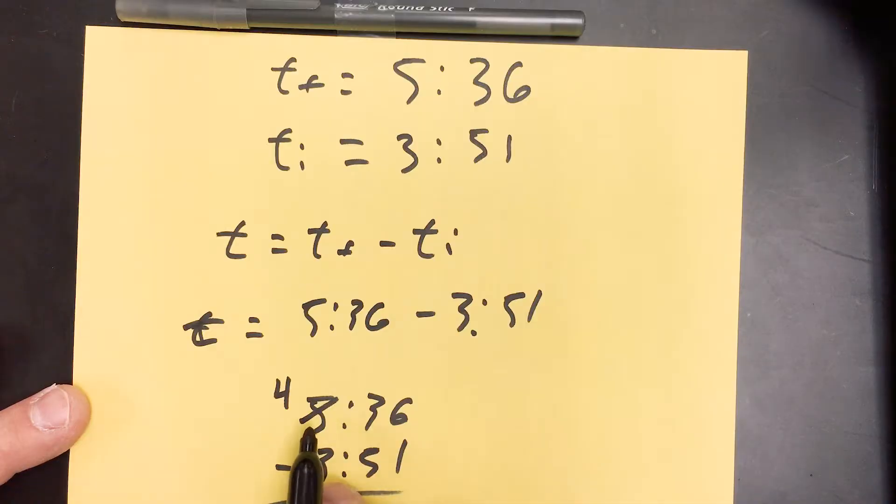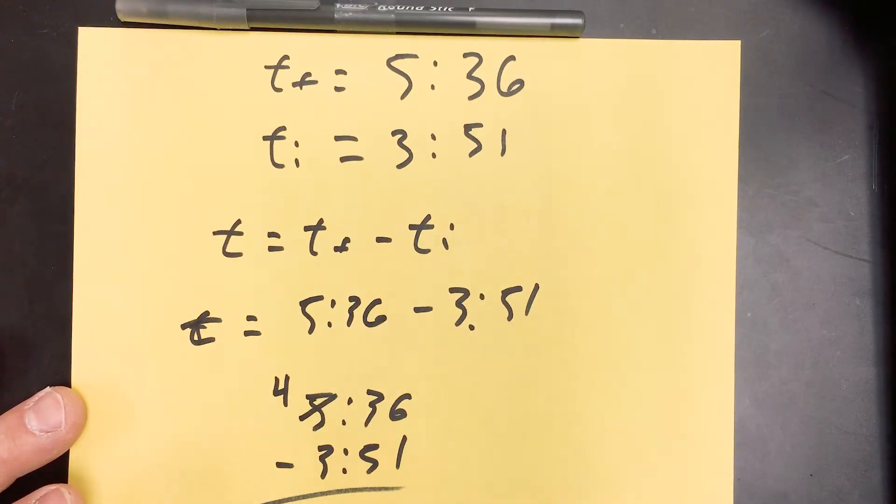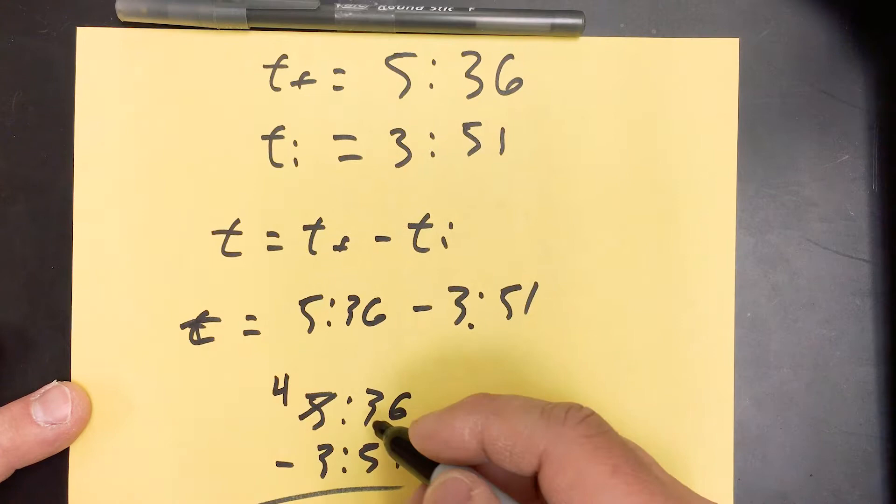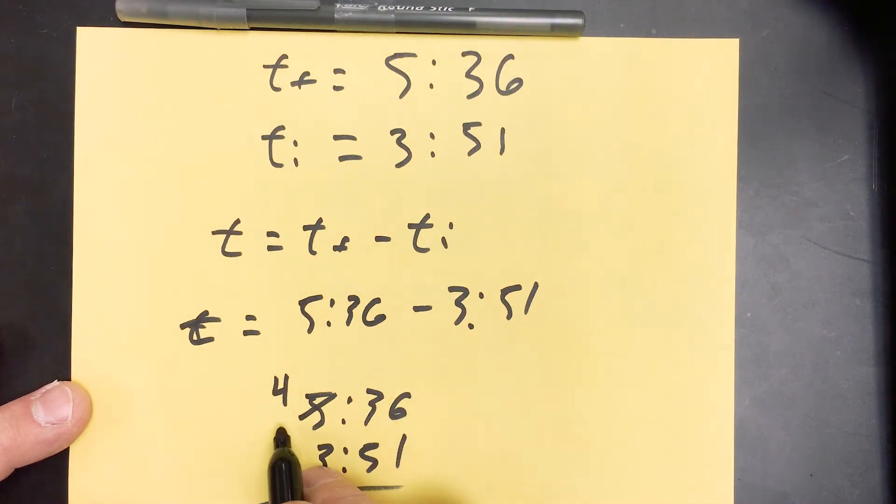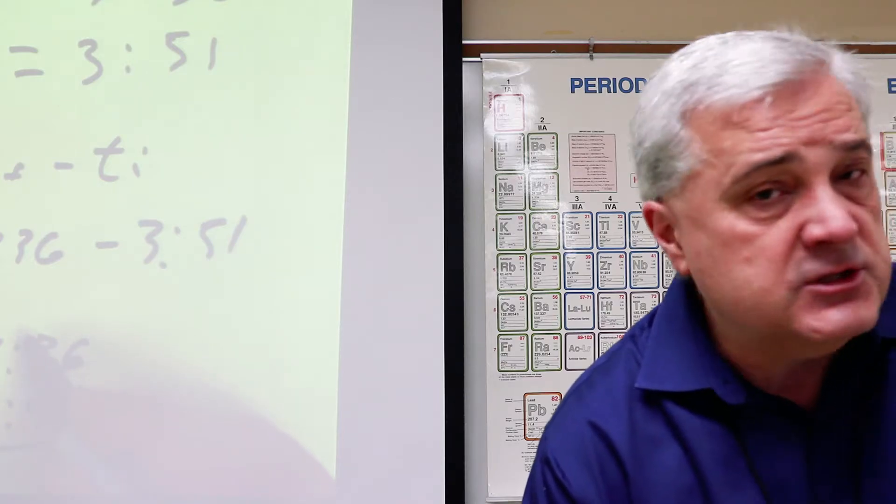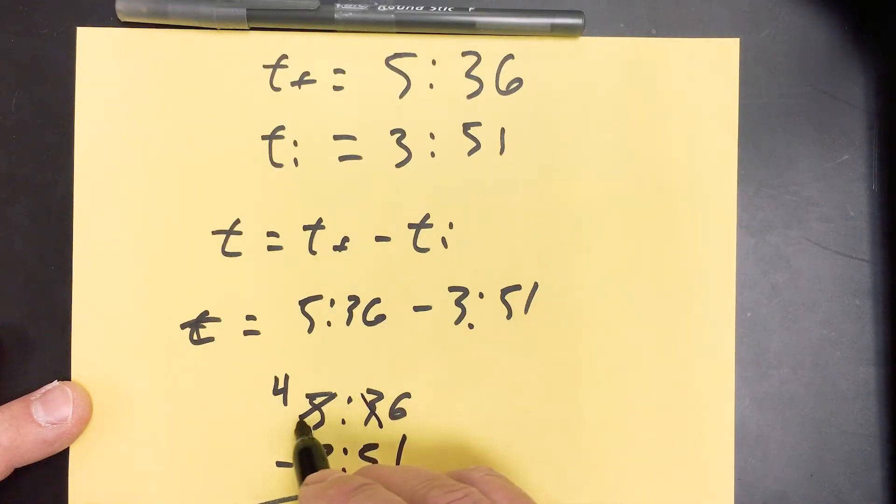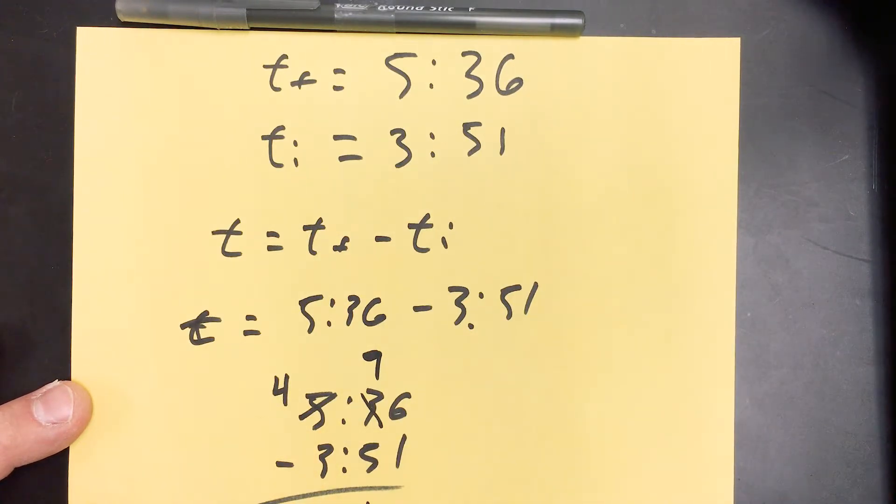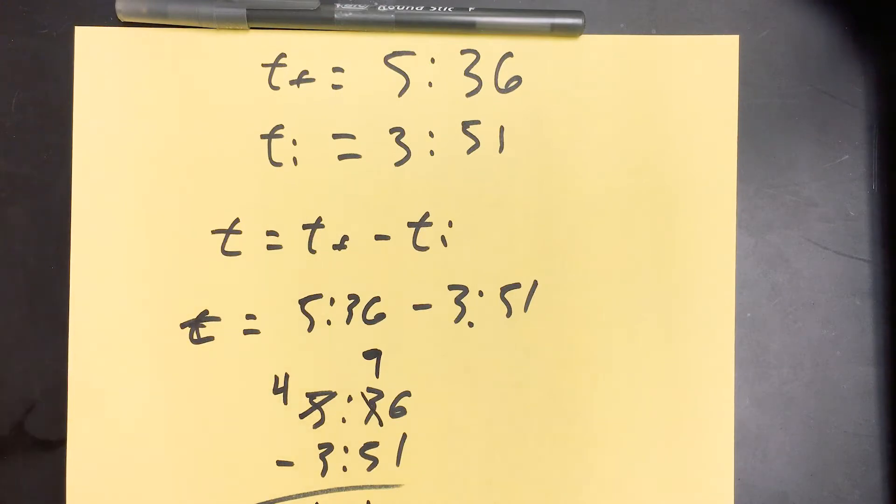But when we're borrowing here, we're bringing 60 seconds across. So this is the 10 second column. We're bringing 6 tens of seconds across. So the 3 doesn't become a 13. It becomes a 9. And 9 minus 5 is 4. And 4 minus 3 is 1.